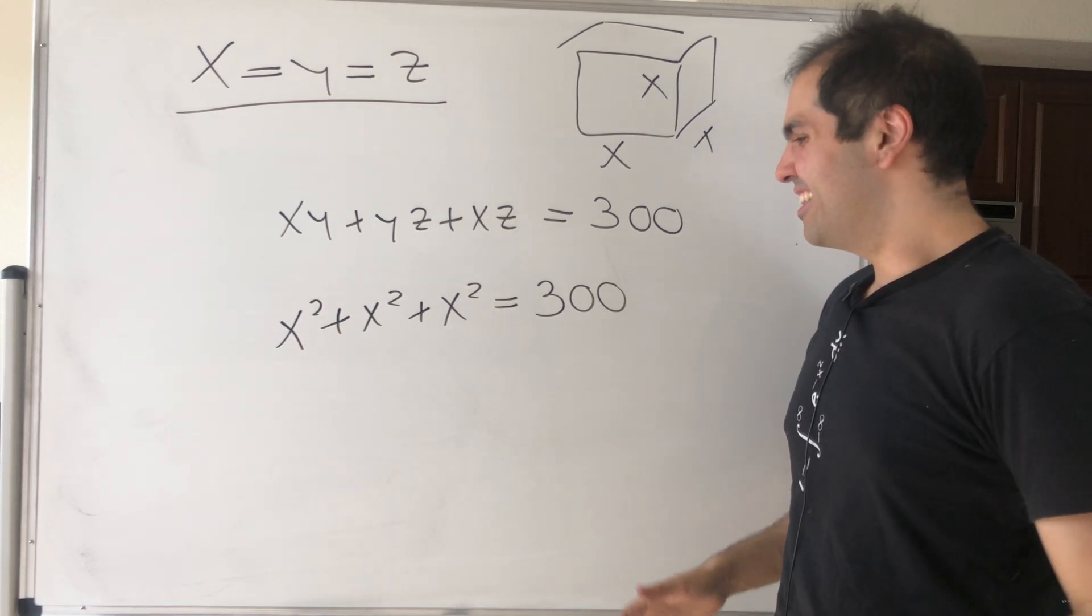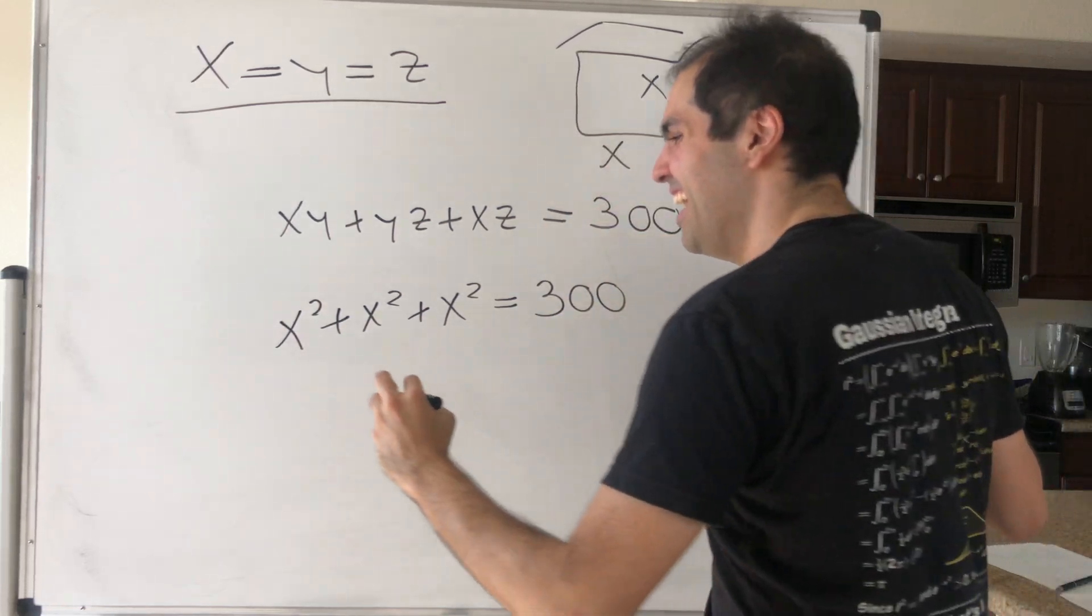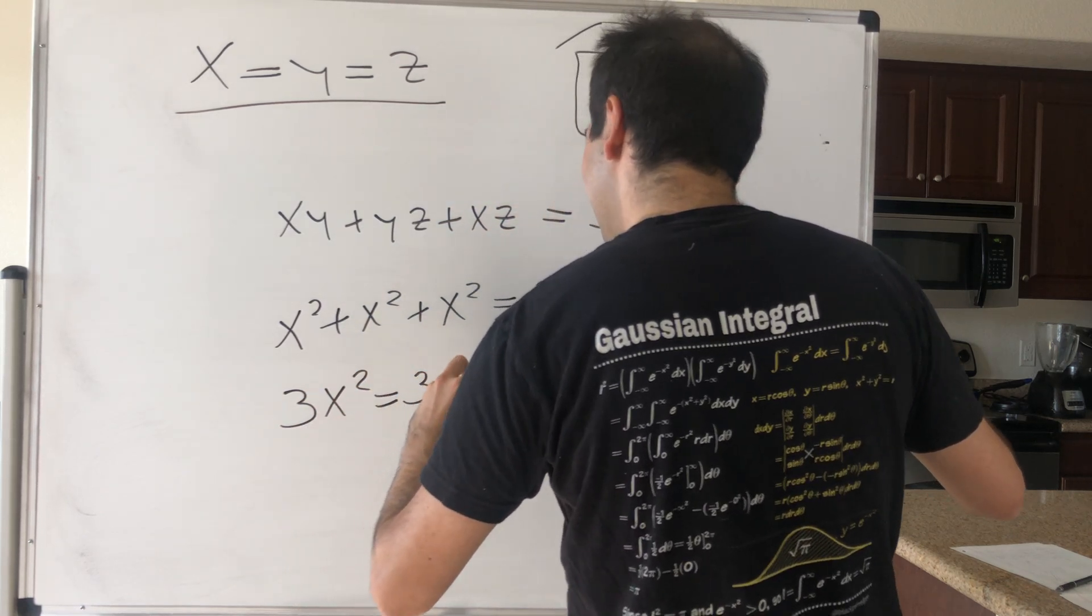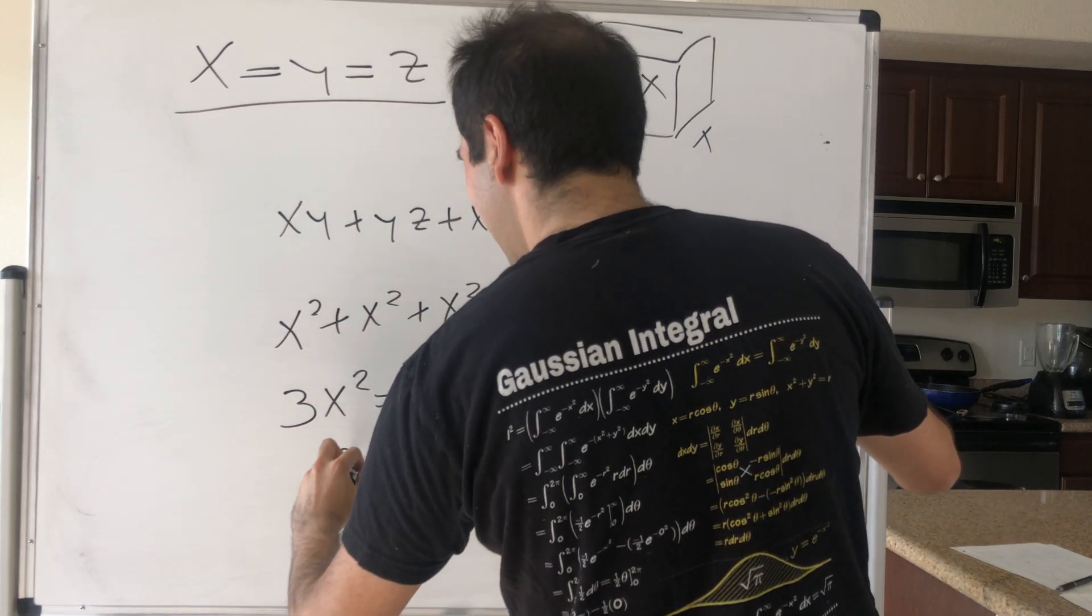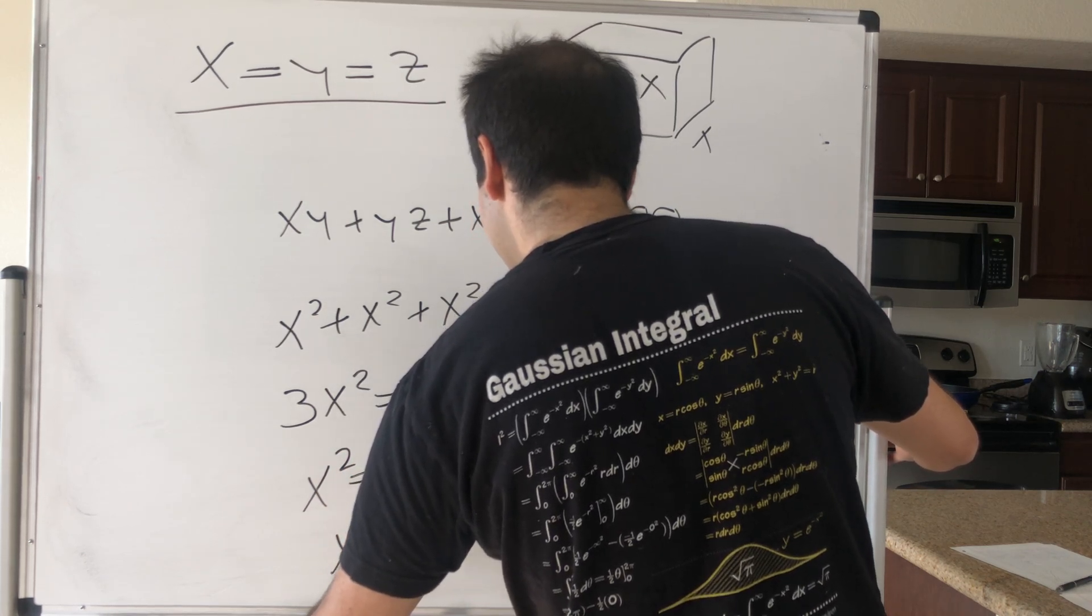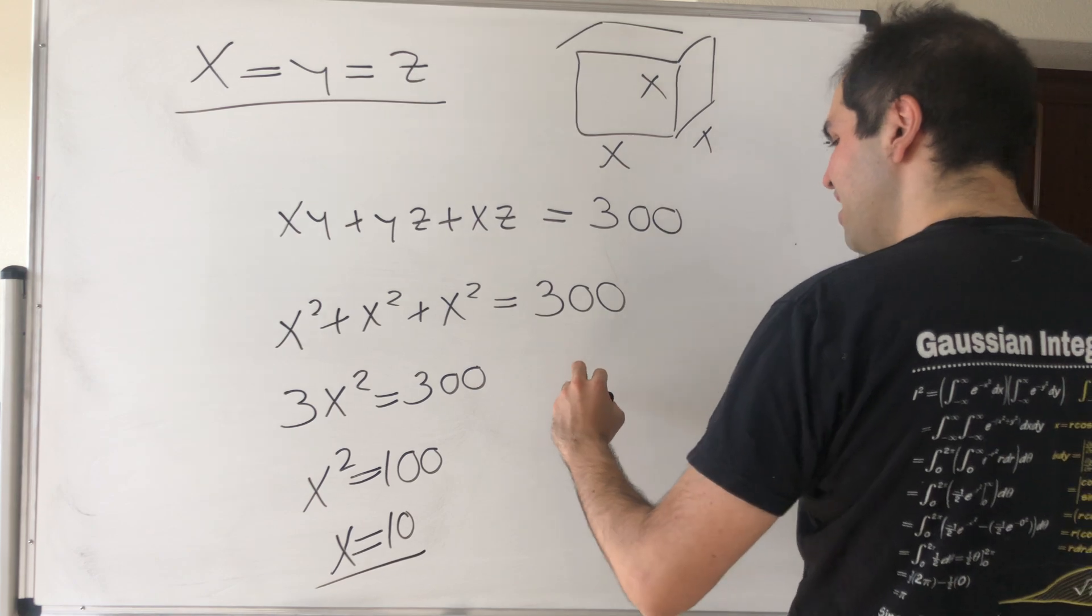This is Sparta—this is IKEA! Then we get 3x squared equals 300, and then x squared equals 100. But now x is positive, so x is 10.